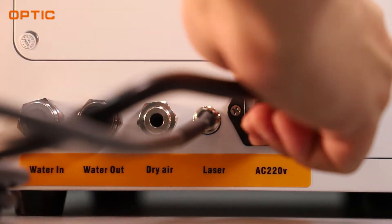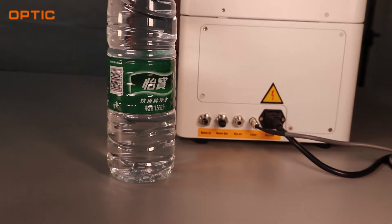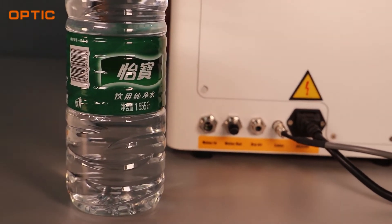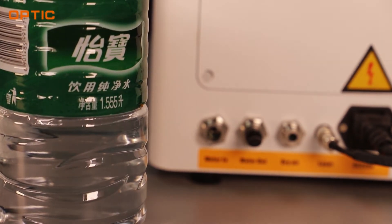Prepare 1.7 liters of purified water or distilled water. In order to protect the life of the machine and the cooling effect, pure water or distilled water can better protect the optical system of the machine.